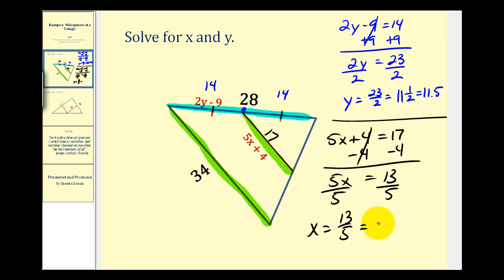X equals thirteen-fifths. Well there are two fives in thirteen, so two and three-fifths. We can check this: five times two plus three does give us thirteen. Or as a decimal, this would be two point six units. Let's take a look at one more example.